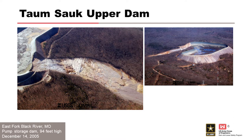The dam at the lower reservoir, which by design was able to hold much of the capacity of the upper reservoir, withstood the onslaught of the flood and was able to store most of the deluge, sparing the downstream towns.